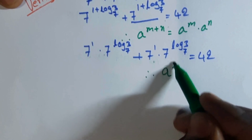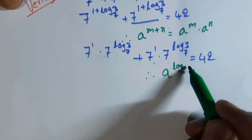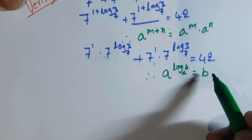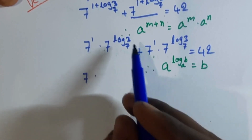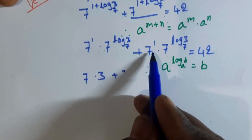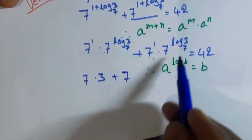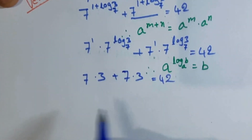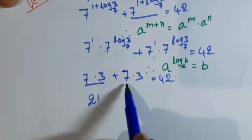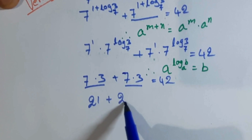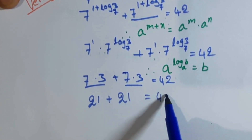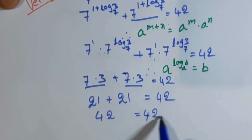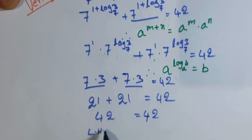Using the identity a to the power of log b base a equal to b, we get 7 into 3 plus 7 into 3 equal to 42, which is 21 plus 21 equal to 42. Therefore 42 equal to 42, hence LHS equal to RHS and the answer is verified.